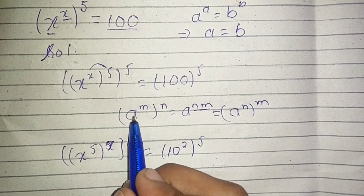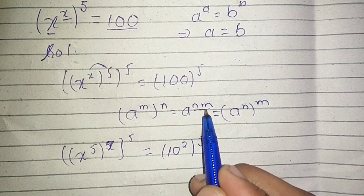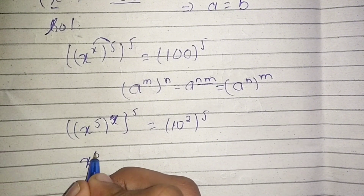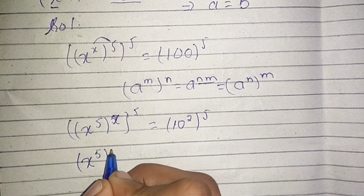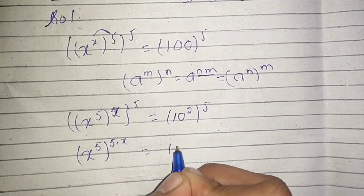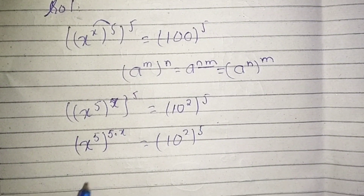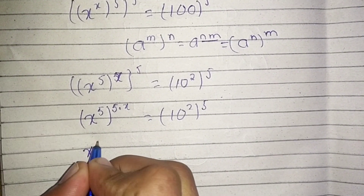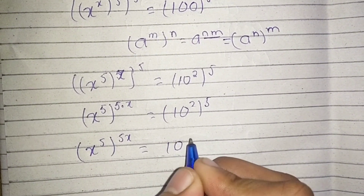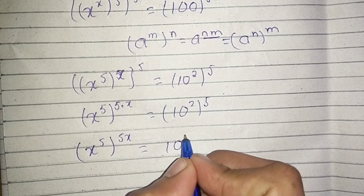Now applying the identity (a^m)^n = a^(n×m), we can write this as (x^5)^(5x) = 10^(2×5) = 10^10.